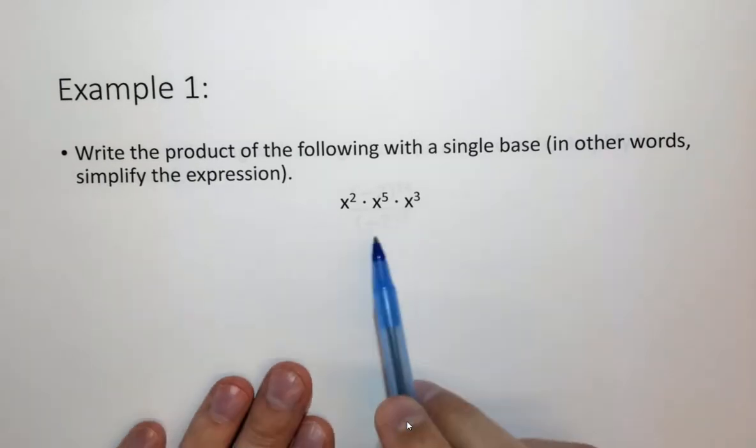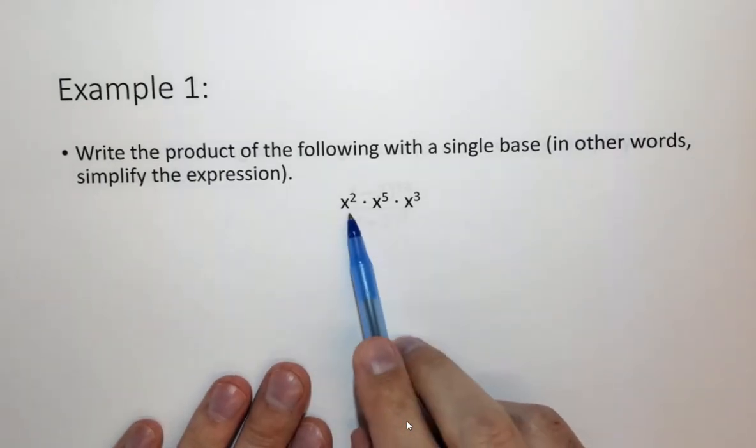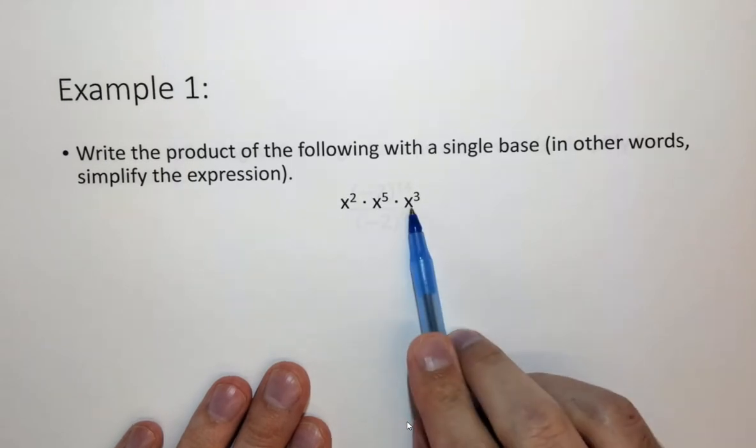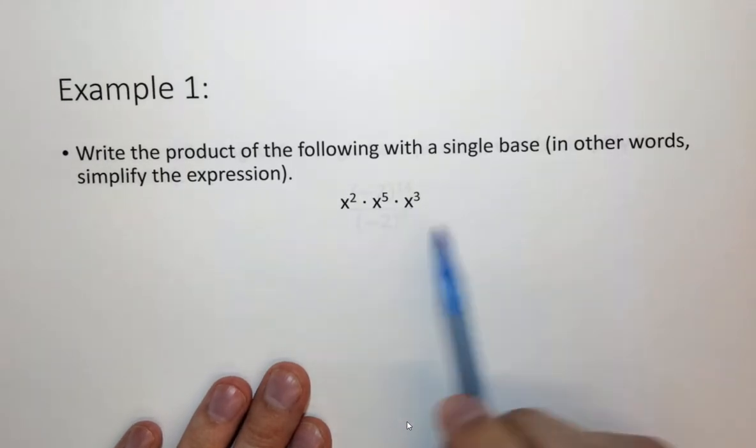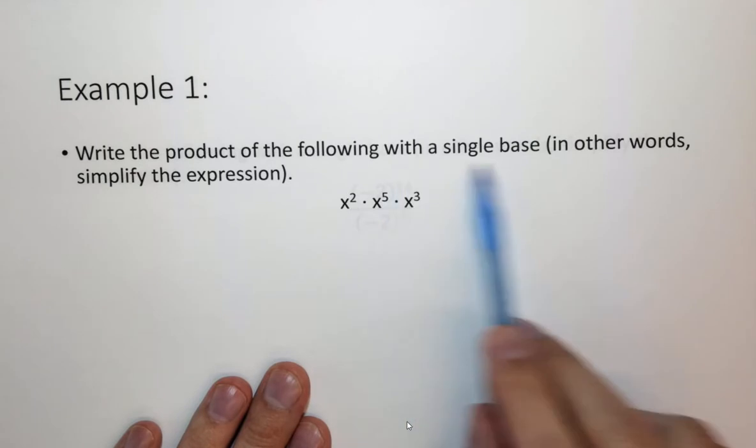So here we have an expression we want to simplify, which is x squared times x to the fifth times x to the third, and we want to simplify it with a single base unit.